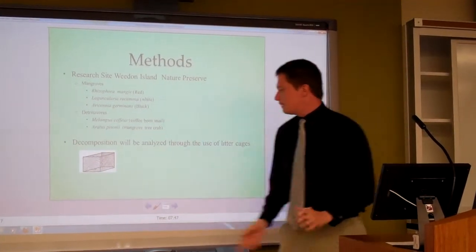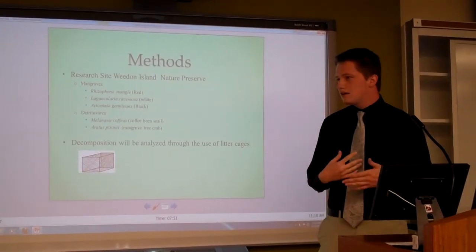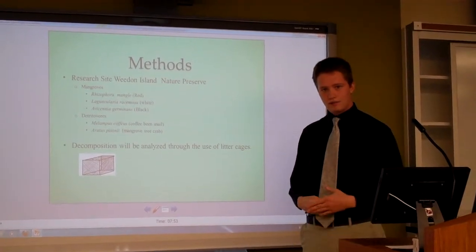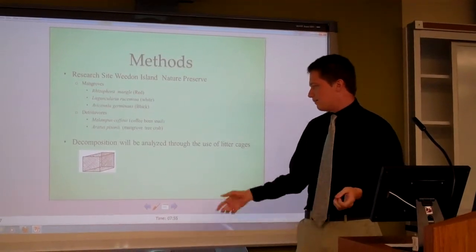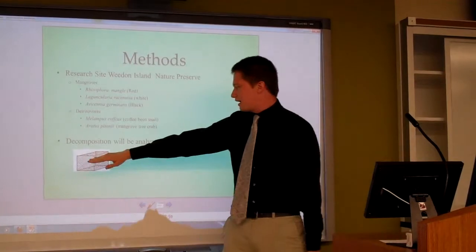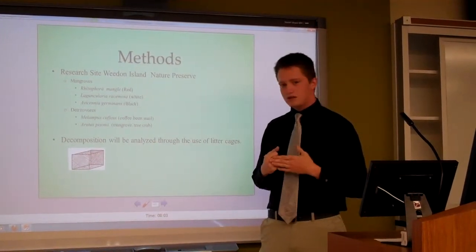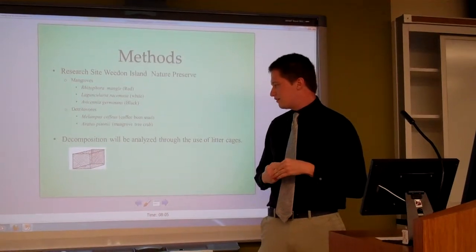The first type of cage will be a very fine mosquito net meshing to prevent the detritivores from entering the cages, the macrodetritivores. So it's just the fungal and bacterial components. The top of the cage has a larger opening to reduce alteration by light, or the effect of light on it.